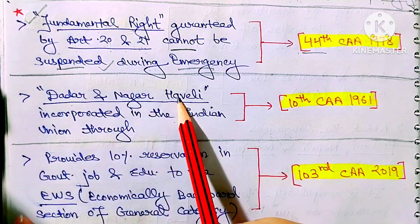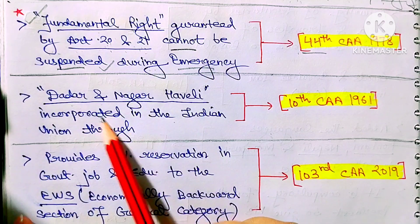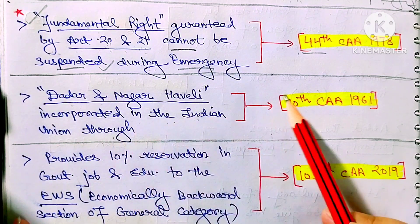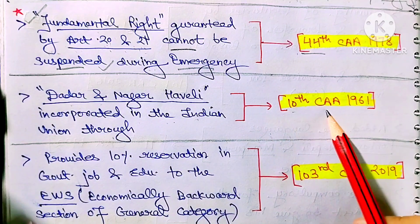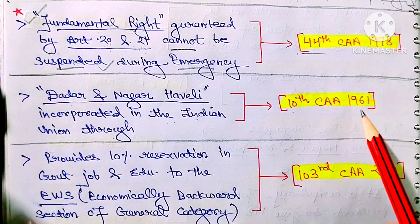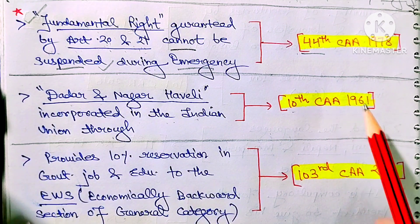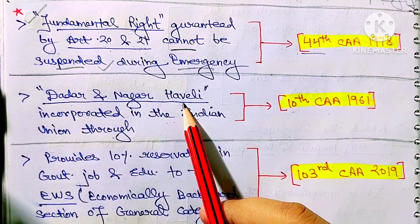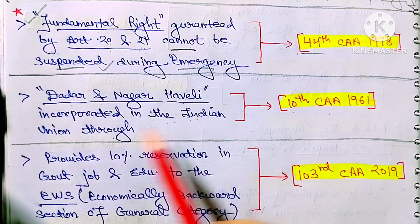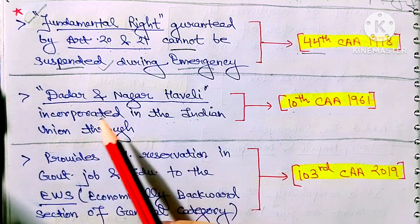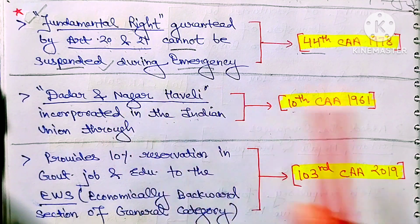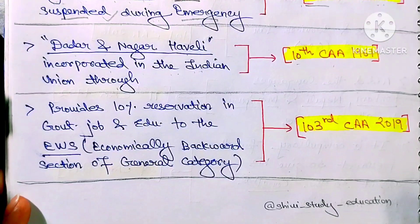Next: Dadar and Nagar Haveli were incorporated into the Indian Union through the 10th Amendment Act 1961. Under this amendment act, Dadar and Nagar Haveli were included in the Indian Union.